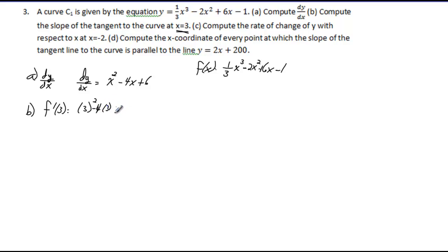Plus 6. Three squared gives you 9, negative 4 times 3 gives you negative 12 plus 6. Nine minus 12 gives you negative 3, negative 3 plus 6 gives you positive 3. So the derivative when x equals 3 is 3.